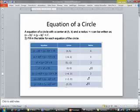I get x minus negative 4 squared plus y minus 3 squared equals 2 squared. We could simplify this.